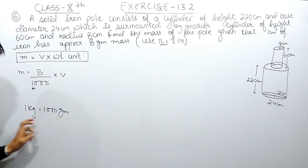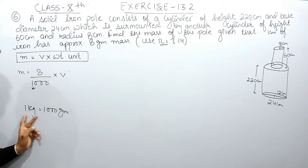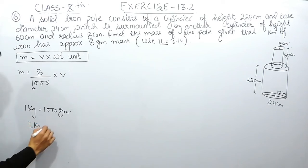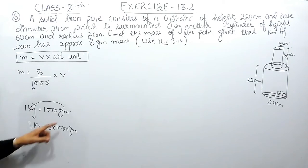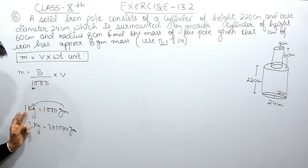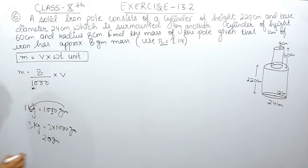To convert kg into grams you multiply by 1000 — for example, 3 kg equals 3 multiplied by 1000 grams. If the process is reversed and you have to convert grams into kg, you divide by 1000. For example, 20 grams divided by 1000 gives kg. Similarly, to convert 8 grams into kg, it becomes 8 divided by 1000.